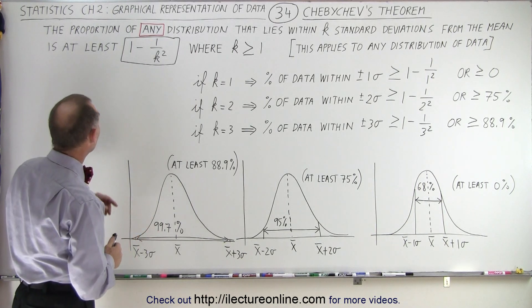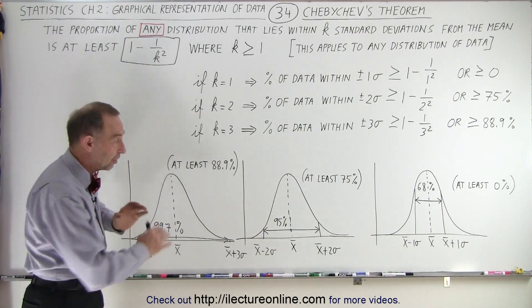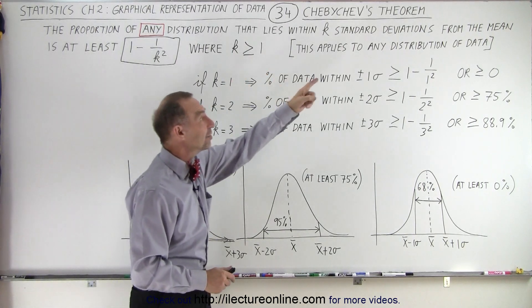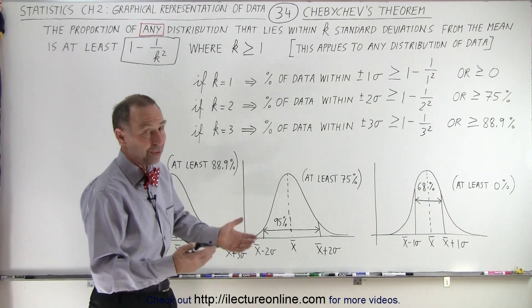His theorem says that the proportion of any distribution—and that's the key, any distribution, it doesn't have to be normal—that lies within k standard deviations, where k could be one, one and a half, two, one and three quarters, three, doesn't matter.